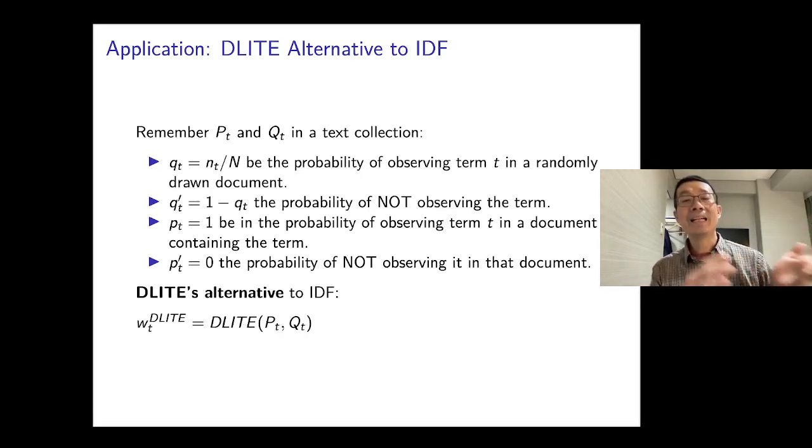With D-LITE, we can apply D-LITE to terms and be able to measure the amount of information as term weights. Remember, earlier we discussed the PT and QT in the text collection. QT being the probability of observing term T in a random drawn document. And PT is the probability of observing term T in the document containing that term, which is going to be one. With that PT distribution and QT distribution, we can actually compare and compute the D-LITE between the two distributions as the term weight for term T. That is our alternative to IDF. Remember, IDF is the amount of information measured by KL divergence, whereas our alternative here is the amount of information in the term measured by D-LITE.